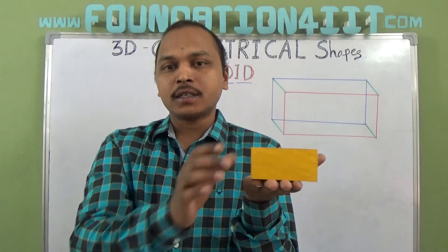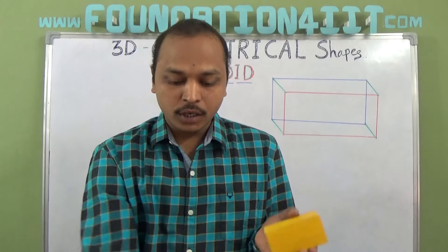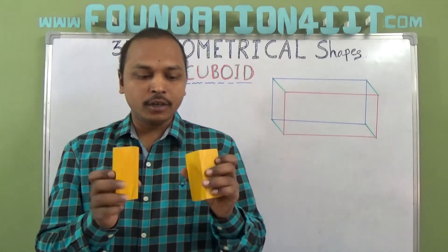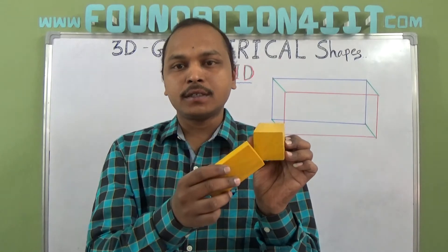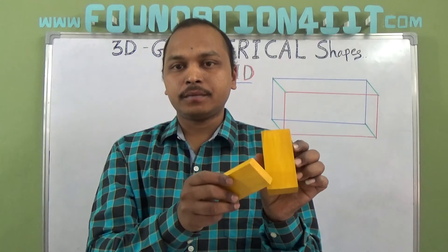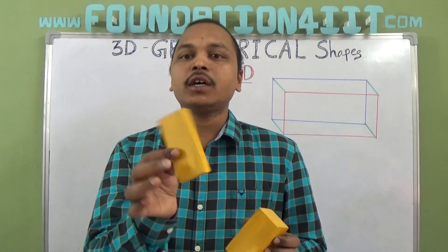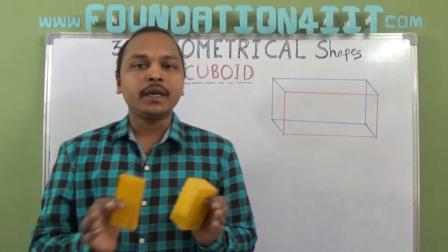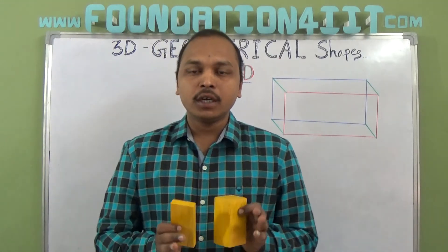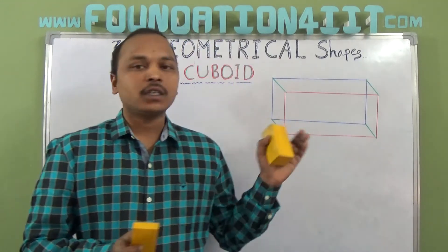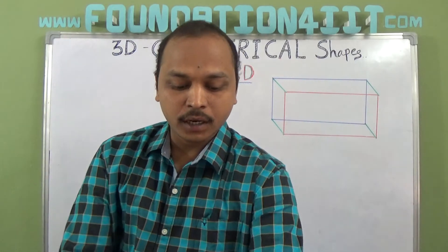You can place the cuboid different ways and the length, breadth, and height change accordingly. If length, breadth, and height are all the same, it is called a cube. If any one is different, it is a rectangular prism or cuboid.